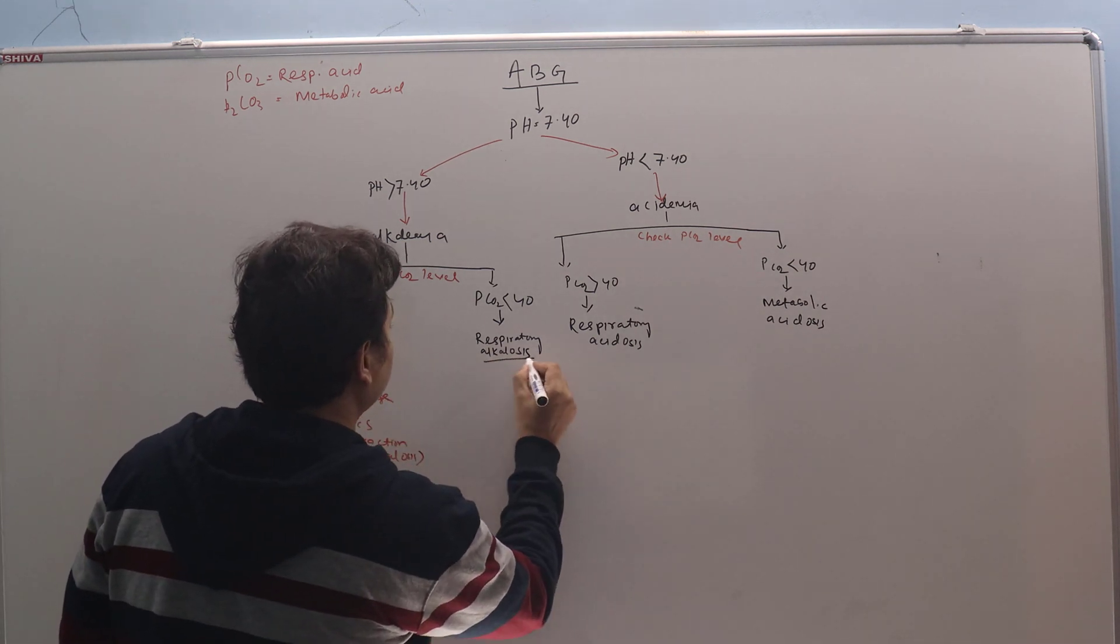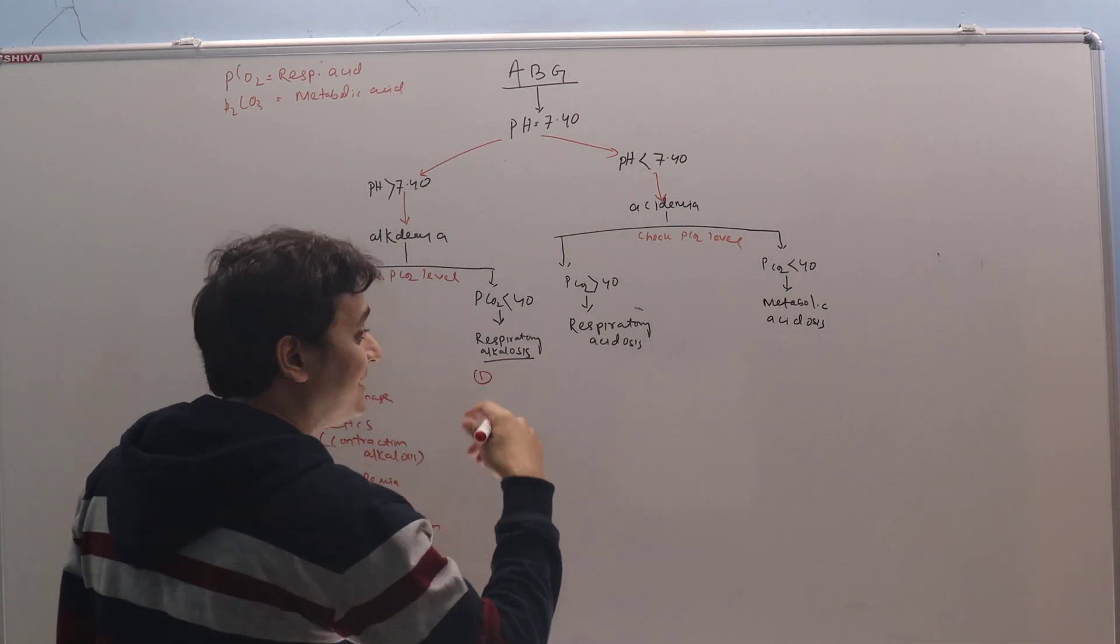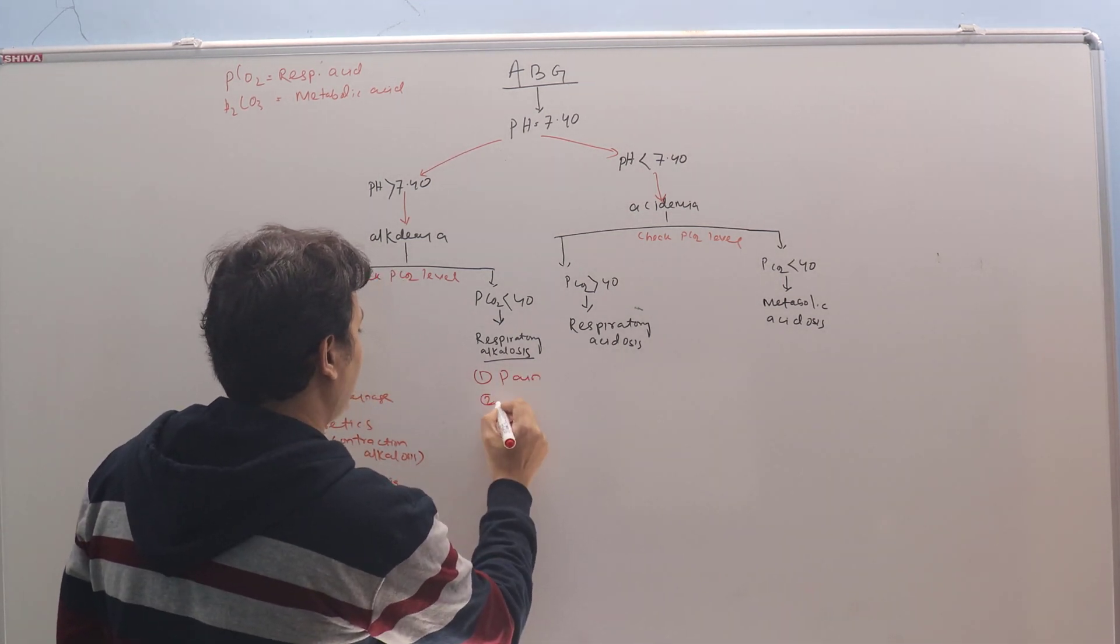What are the most common causes of respiratory alkalosis in ICU? Number one, anything that will produce hyperventilation. Pain is the most common cause. Fever, anxiety, or any CNS disorder which can produce hyperventilation.